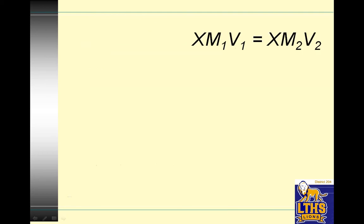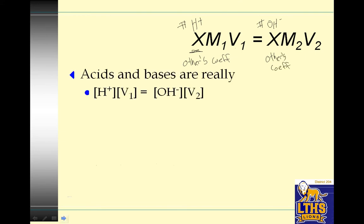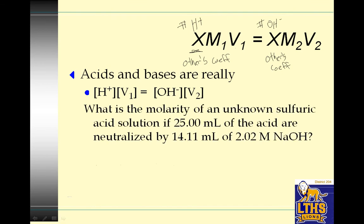So the formula is XM1V1 equals XM2V2. And the X, if we're talking about acids and bases, it's the number of H's and the number of OH's. But if it's not, if it's a redox thing, it's the other's coefficient, which is crazy. And I'll show you this because I hope it's popping up right now. Acids and bases are really, yeah, there you go. So notice I put that X in there, so you know it's for each of them.